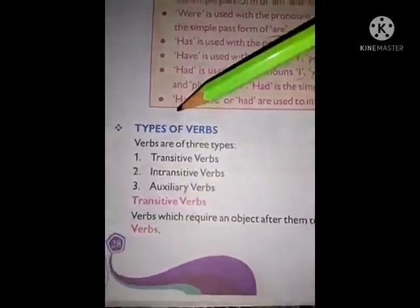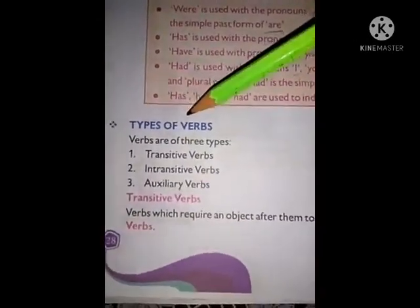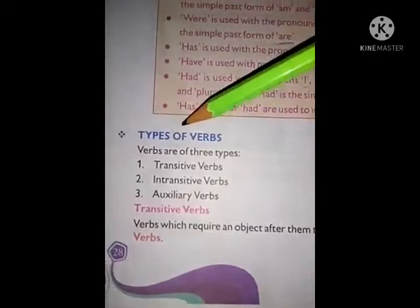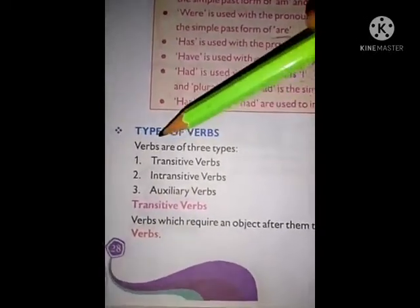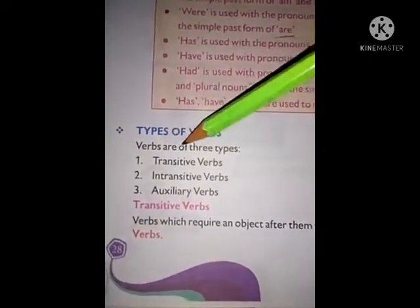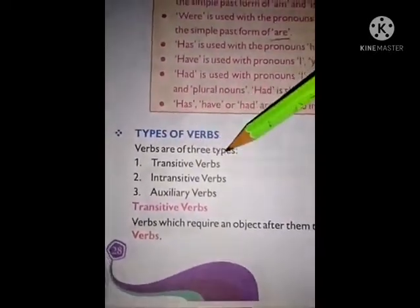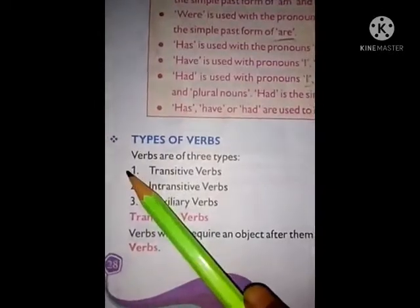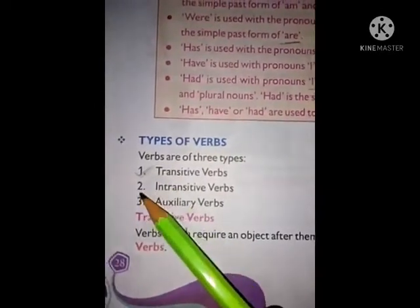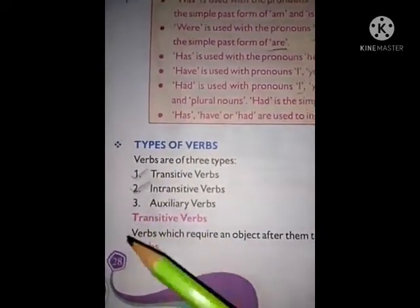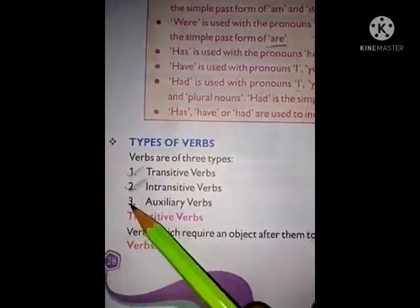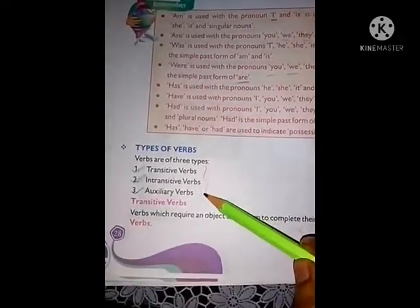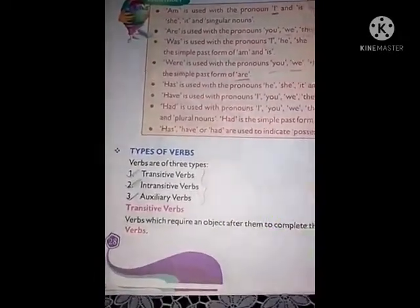Today we are going to learn about types of verbs. Verbs are of 3 types: number 1, transitive verbs; number 2, intransitive verbs; number 3, auxiliary verbs. So these are the 3 types of verbs.